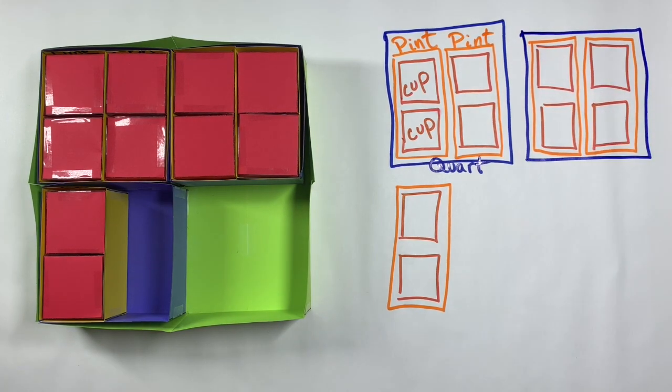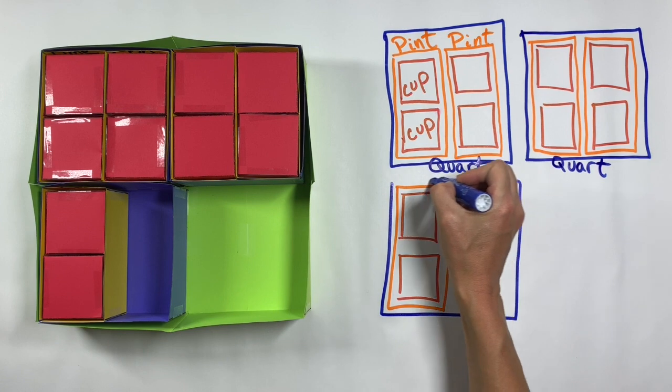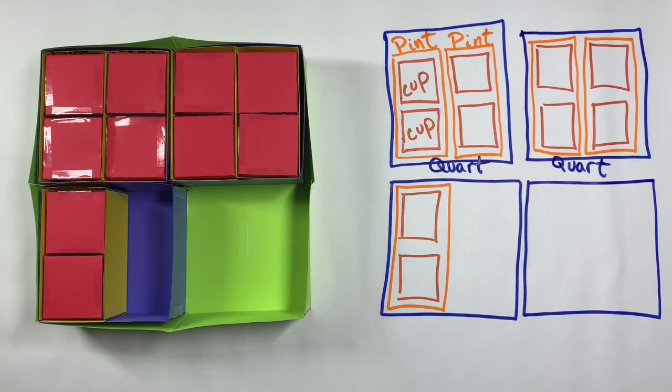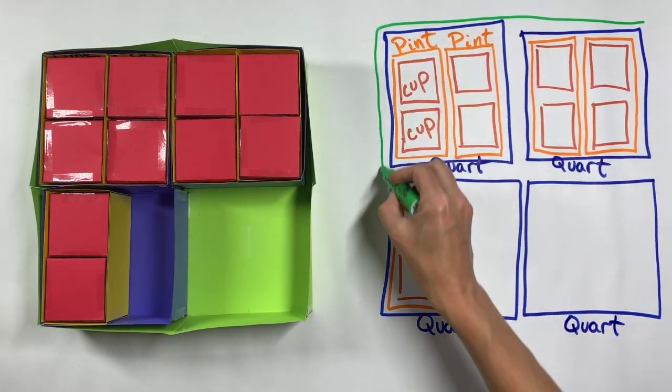So at this point, even though not all of my red squares are perfect squares and not all of them match exactly, they are accurately and precisely showing the relationship between cups and pints. Because in all of my diagram here, two cups make up one pint.